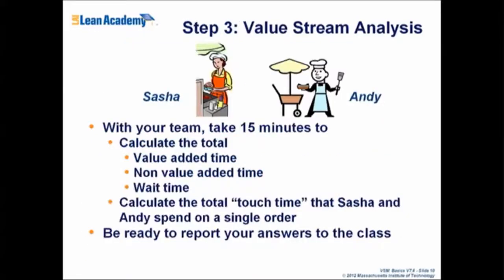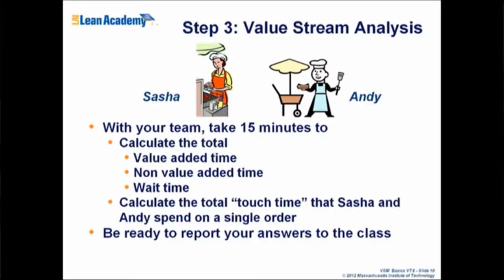Take the second handout with the different processes. Write down in your groups — you have 10 minutes — who is doing what, how much time they're spending, and whether it's value-added or non-value-added.